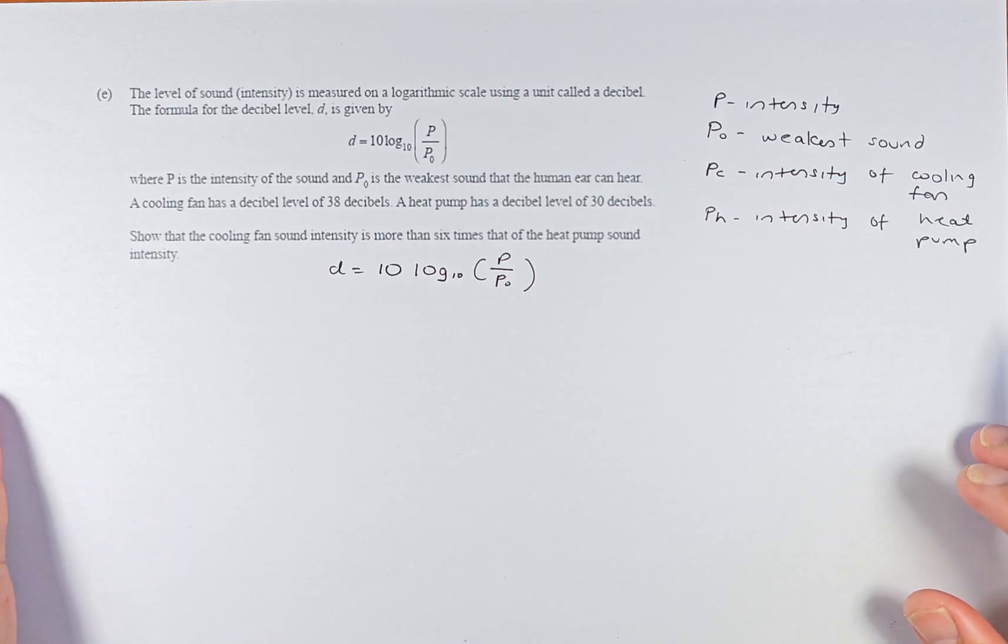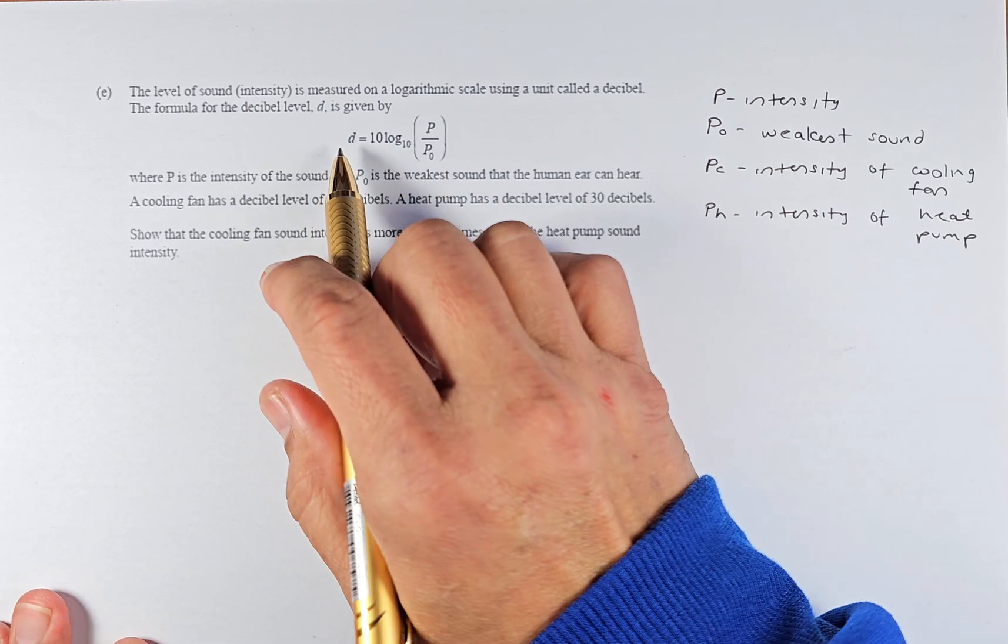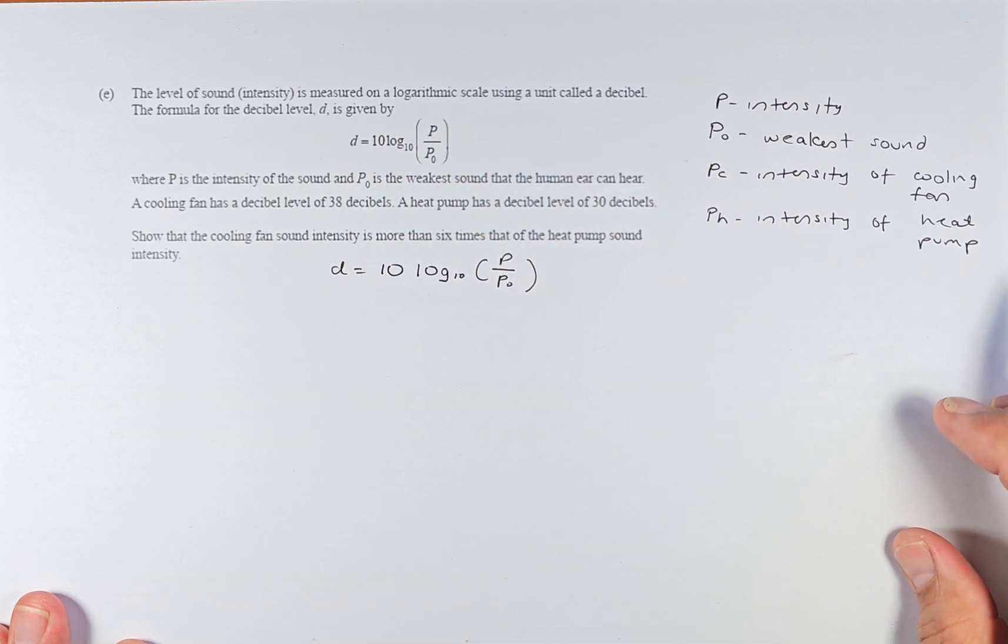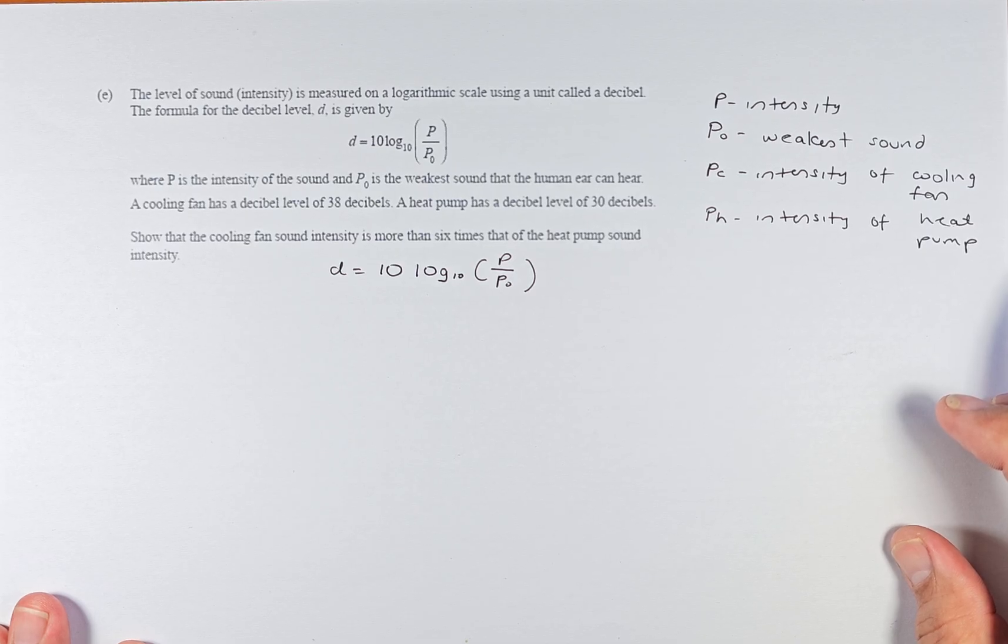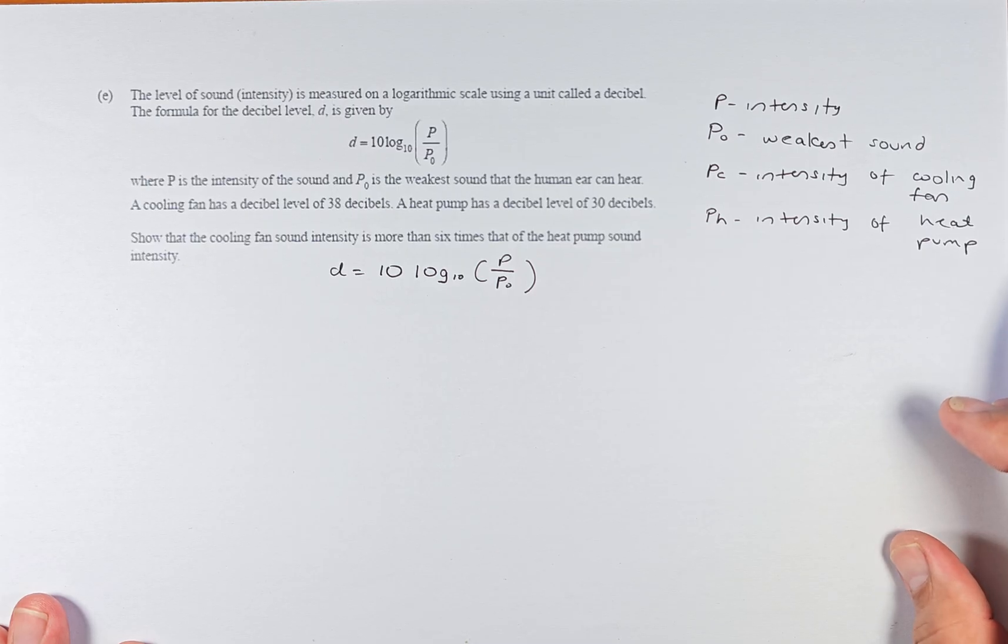The level of sound intensity is measured on a logarithmic scale using a unit called the decibel. The formula for the decibel is given by D = 10 log₁₀(P/P₀), where P is the intensity and P₀ is the weakest sound that the human ear can hear. A cooling fan has a decibel of 38, a heat pump has a decibel of 30. Show that the cooling fan sound intensity is more than 6 times that of the heat pump sound intensity.